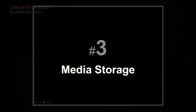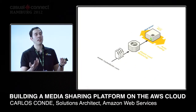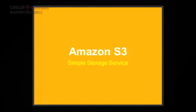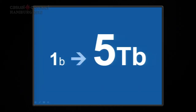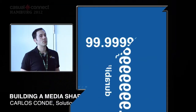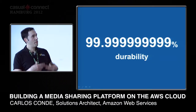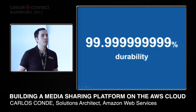Now let's look at storage, because we're building a media sharing platform. You upload files to your web servers but you're not going to store them on the web server itself. The service to use is Amazon S3 — Simple Storage Service — a key-value storage service on the cloud. You get a uniform resource locator for each object you put on S3. S3 allows you to store files from one byte to five terabytes with eleven nines of durability, achieved by replicating files across different data centers and different racks within data centers.